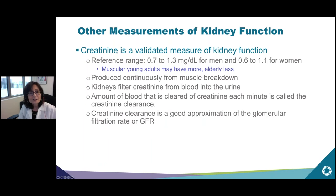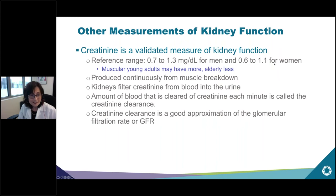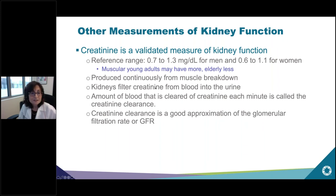Creatinine is the most validated measure of kidney function we have. The reference range varies between males and females — for men it's 0.7 to 1.3, a little bit lower for women. Creatinine is a normal muscle breakdown product, so anyone very muscular will make more creatinine. Creatinine is produced continuously from muscle breakdown; the kidneys filter it from blood into the urine. The amount of blood cleared of creatinine each minute is called the creatinine clearance, which is a very good approximation of the glomerular filtration rate.